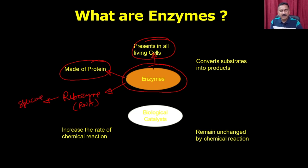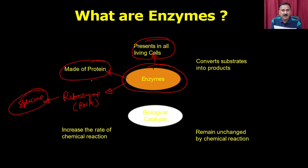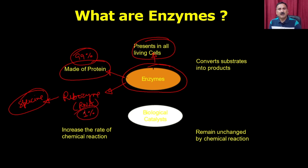If we ignore the ribozymes, it is true that most enzymes are made up of proteins. We can say 99% of enzymes are made up of proteins; only maybe 1% or less than 1% of enzymes are made up of RNA or ribozymes. And these ribozymes are only doing one activity - they are involved in splicing.